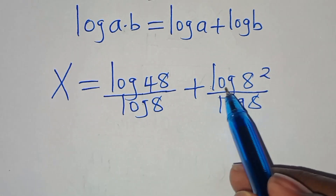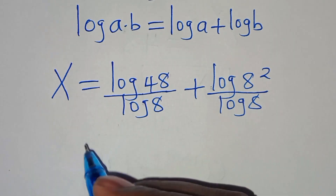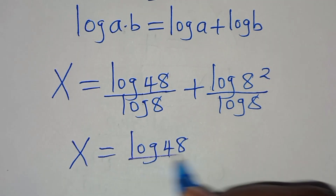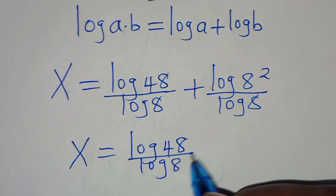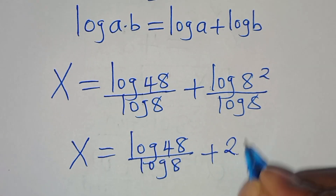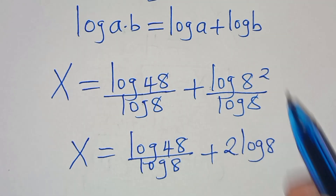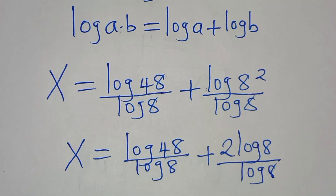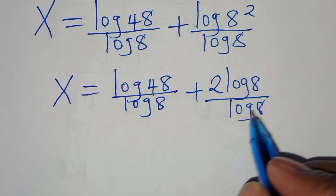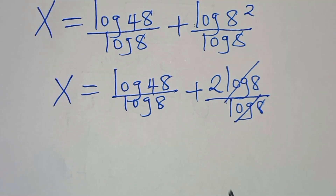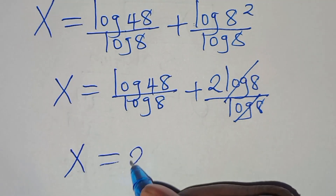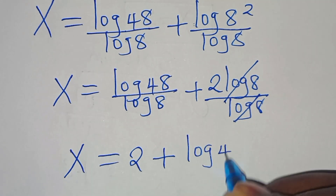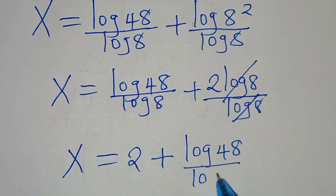Applying the power property to log(8^2), this becomes 2·log(8) divided by log(8). So we can simplify log(8) and log(8) there, giving x equals 2 plus log(48) divided by log(8).